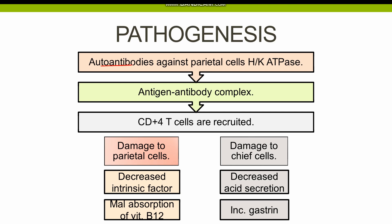In autoimmune gastritis, autoantibodies are formed against the parietal cells' hydrogen-potassium ATPase. Hydrogen-potassium ATPase is a protein channel present in the parietal cells. These antibodies form antigen-antibody complexes, resulting in the recruitment of CD4 T cells. These CD4 T cells damage the parietal cells. Since the parietal cells produce intrinsic factor, there is a decreased production of intrinsic factor due to loss of parietal cells.